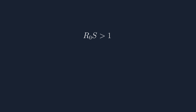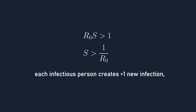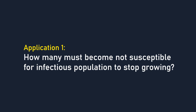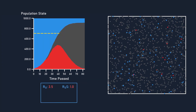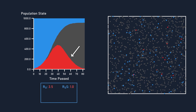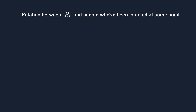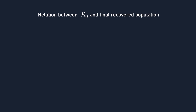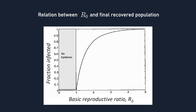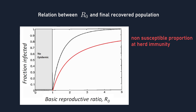This means that as long as R-naught times S is larger than 1 — or in other words, S is larger than 1 divided by R-naught — each infectious person will create more than one new infection, and the infectious population will continue to increase. This is the first application of these epidemiological models: finding out how many people need to become not susceptible in order for the infectious population to stop growing. For example, for an R-naught value of 3.5, when S dips below 1 over 3.5 (about 29%), meaning when 71% of the population is not susceptible, the infectious population will start to decrease. This is what's known as herd immunity. That doesn't mean there won't be new infections though — it just means that the new infections are less than the new recoveries. The actual final proportion of recovered people follows a relation with R-naught that looks something like this, and compared to the susceptible proportion at herd immunity, much less people actually come out unscathed.